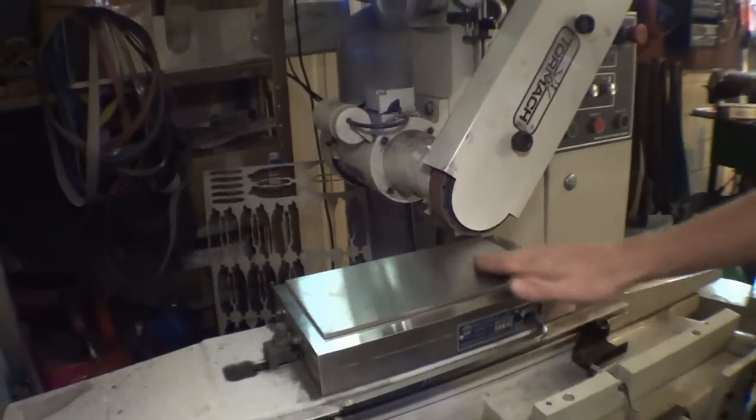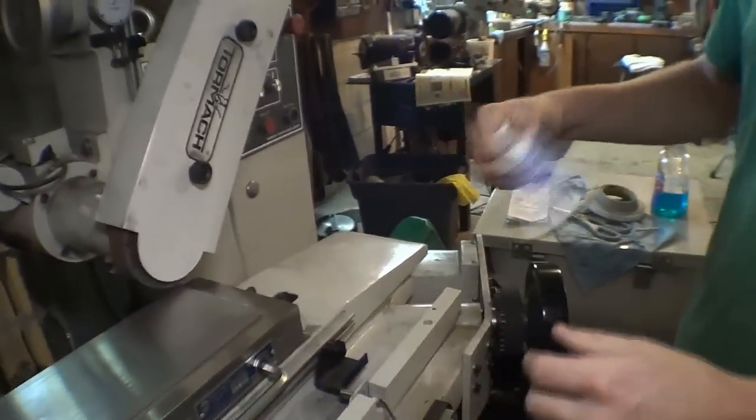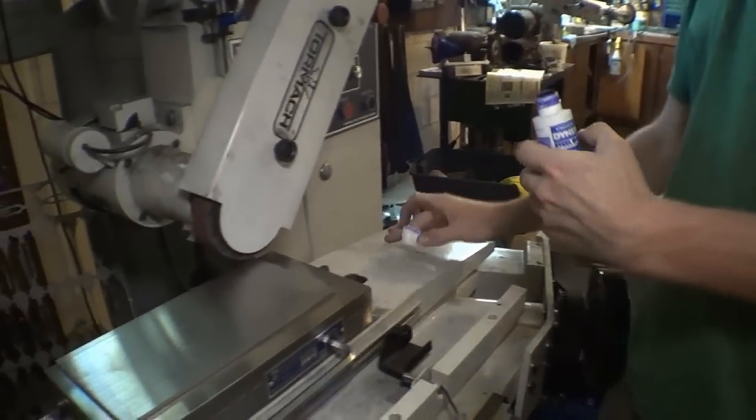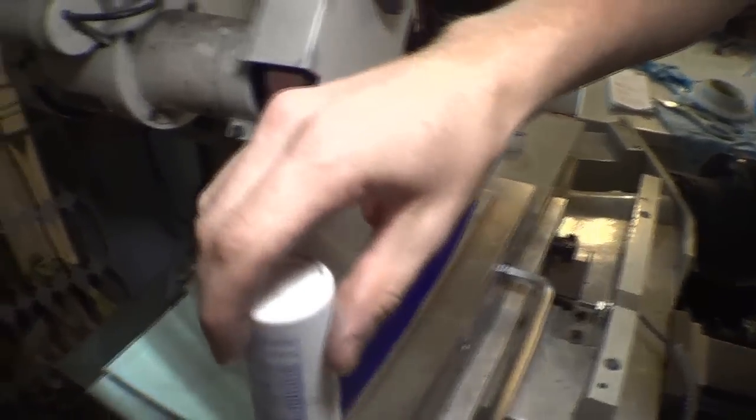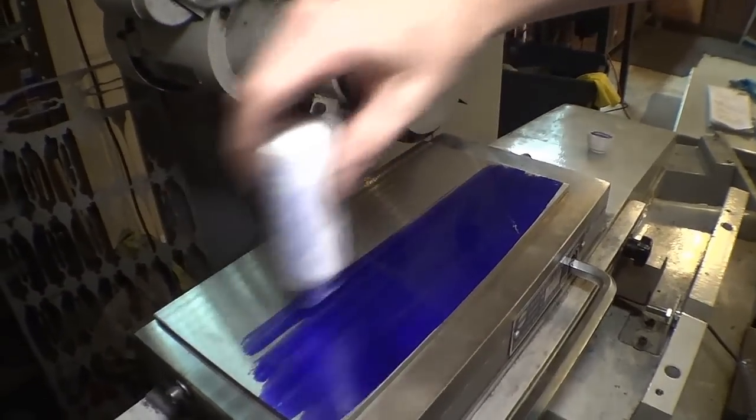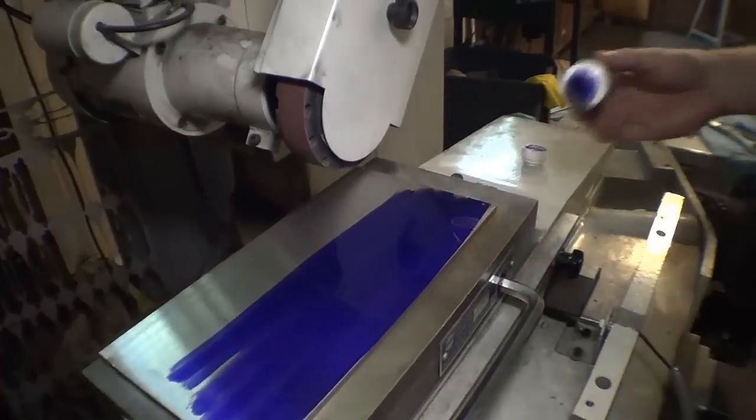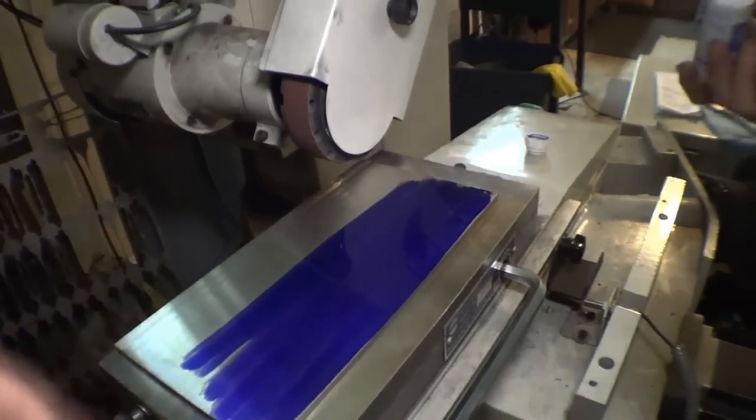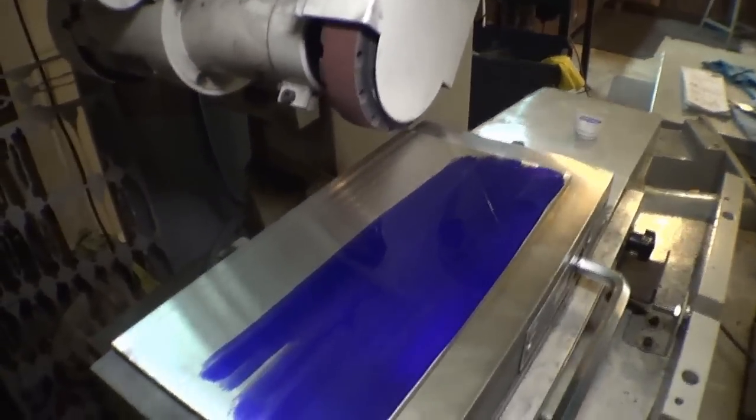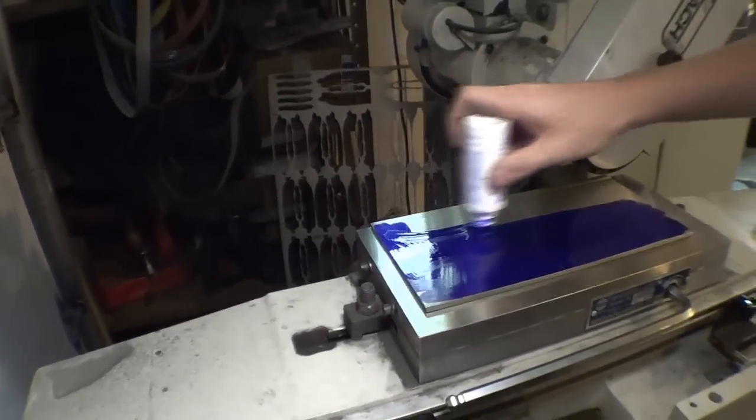All right, what a lot of guys do for surface grinding is they'll take some Dykem, this is a sweet squidgy bottle, and it dries, you know, within seconds. And then the next cut that you do, you'll see if you cut it off, you know, if you cut all the blue off. So handy stuff. Yeah, smells like an auto body shop.